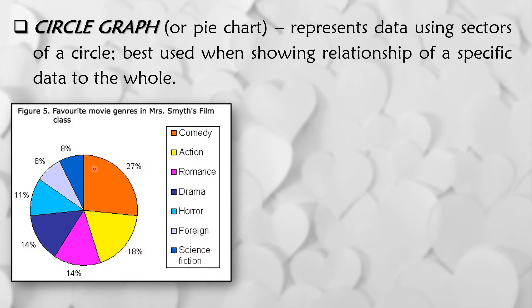So kung mapapansin nyo, yung color orange, ito yung may pinakamalaking part sa ating circle graph or pie chart na binubuo or katumbas ng 27%. And then meron tayong mga given legend. So ang orange dito ay yung comedy. So favorite movie genre in Mrs. Smith's film class. So mas malaki ang percent na may gusto ng comedy.